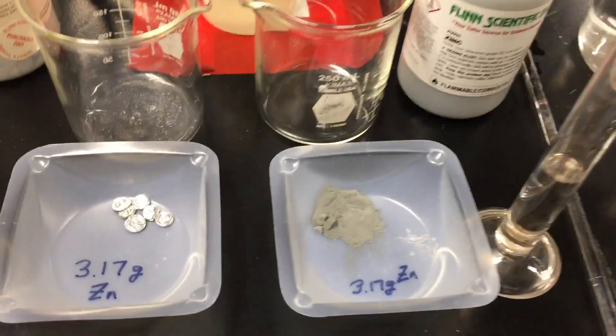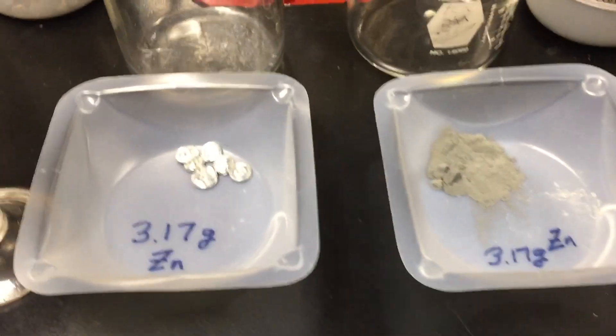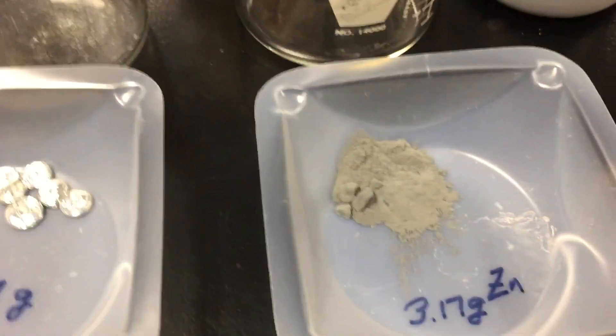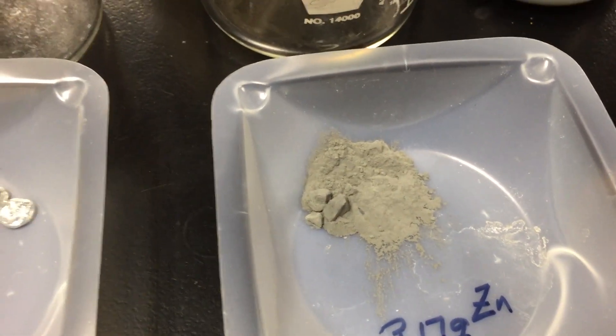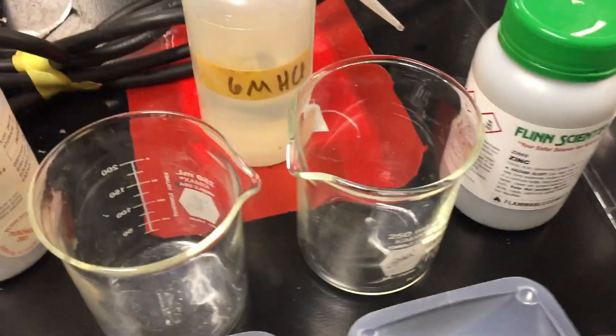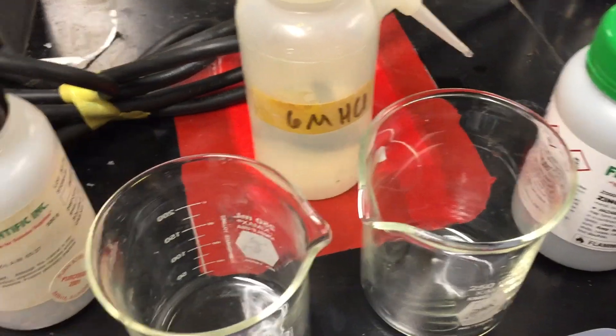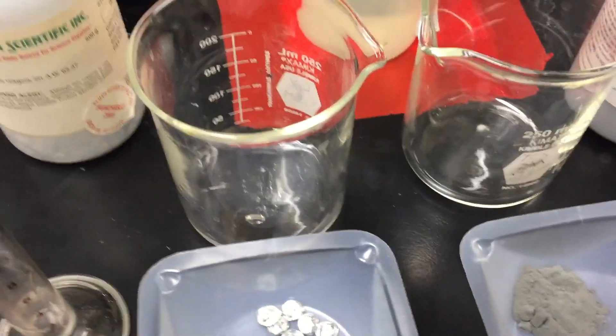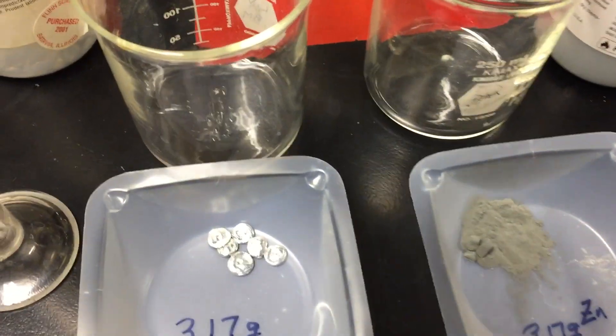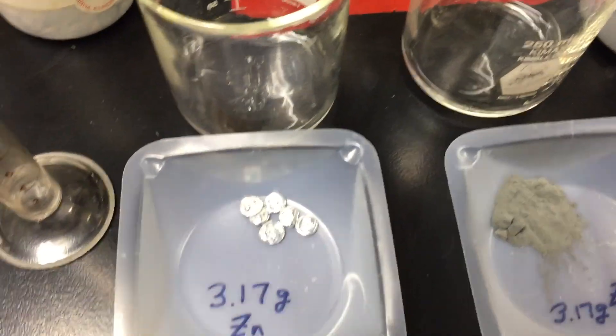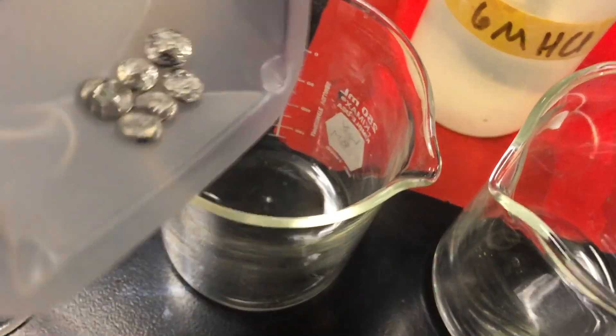Next up will be something called surface area. So in these two weighing boats, I have 3.17 grams of zinc ingots and 3.17 grams of zinc powder. Now to the beaker on the left, we'll be adding 10 milliliters of 6 molar hydrochloric acid, and also to the beaker to the right. So the hydrochloric acid concentration is the same and the volume is the same. Let's go ahead and see what happens when I add the ingots to the 6 molar.